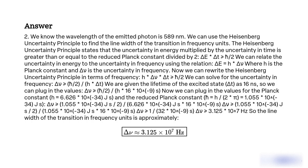We can use the Heisenberg Uncertainty Principle to find the line width of the transition in frequency units. The Heisenberg Uncertainty Principle states that the uncertainty in energy multiplied by the uncertainty in time is greater than or equal to the reduced Planck constant divided by 2: ΔE · Δt ≥ ℏ/2. We can relate the uncertainty in energy to an uncertainty in frequency using the relation ΔE = h · Δν, where h is the Planck constant and Δν is the uncertainty in frequency. Now we can rewrite the Heisenberg Uncertainty Principle in terms of frequency.